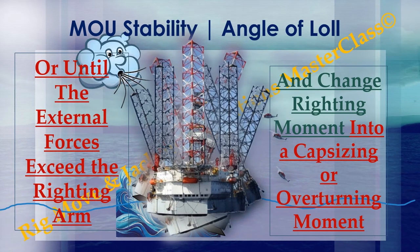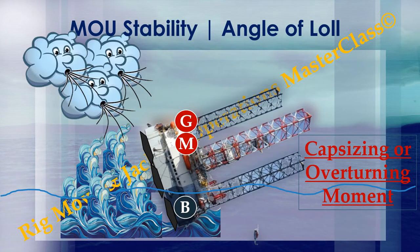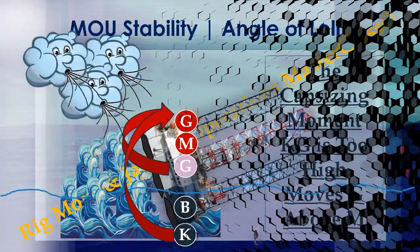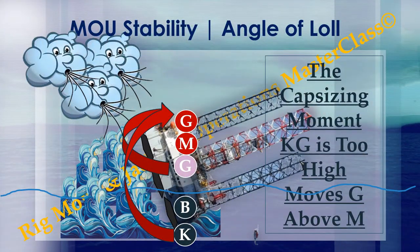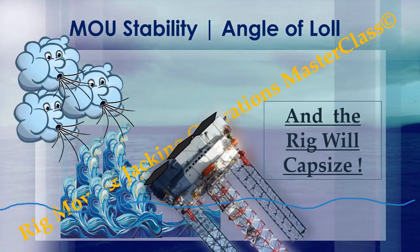This loll rolling repeats until one has corrected GM and KG properly, or until the external forces exceed the righting moment and change the righting moment into a capsizing or overturning moment. The capsizing moment: KG is too high, moving G above M. There is no righting moment to upright the rig any longer.